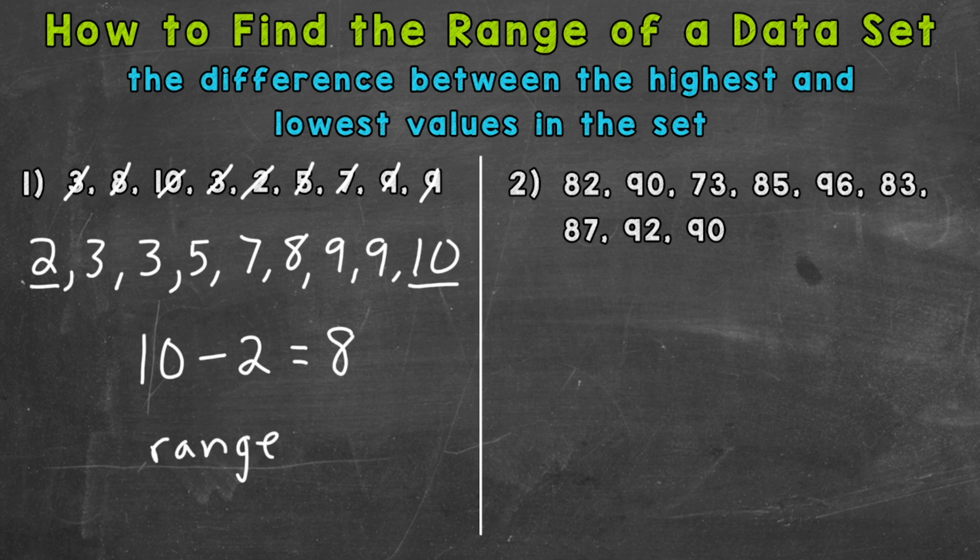So our range equals 8. Alright, onto number two. Again, this data set is not in order, so let's put it in order from least to greatest. Our least valued number here is 73, then we have an 82, 83.